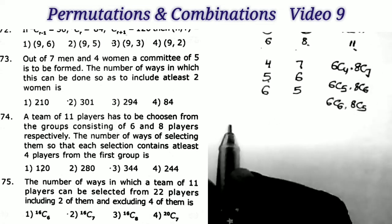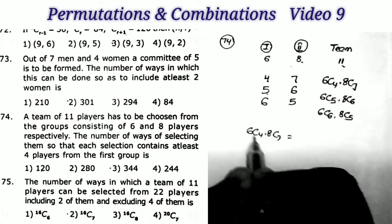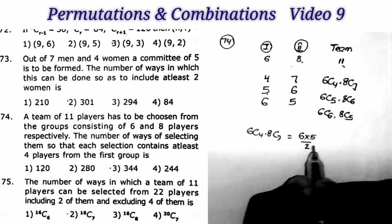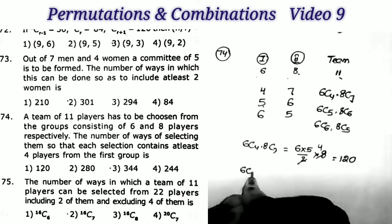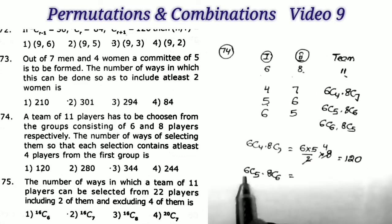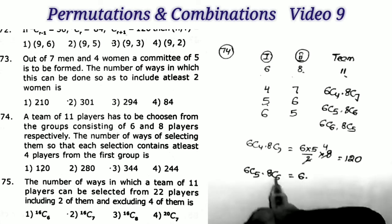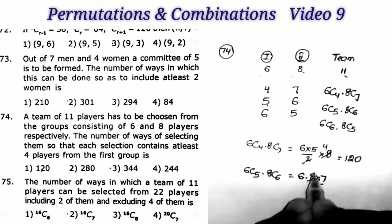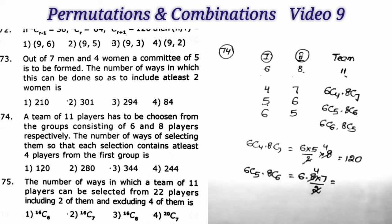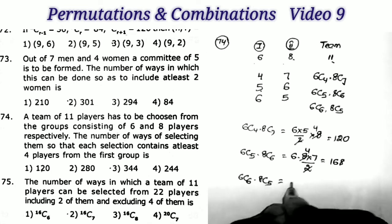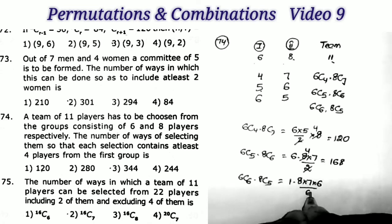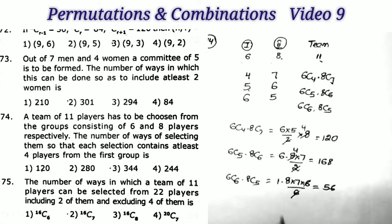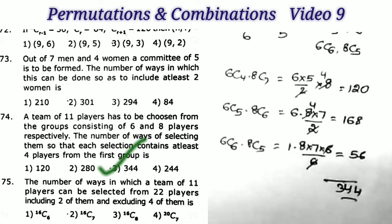First case: 6C4×8C7 = 6C2×8 = 15×8 = 120. Second case: 6C5×8C6 = 6×8C2 = 6×28 = 168. Third case: 6C6×8C5 = 1×56 = 56. Total = 120 + 168 + 56 = 344, and that is the third option.